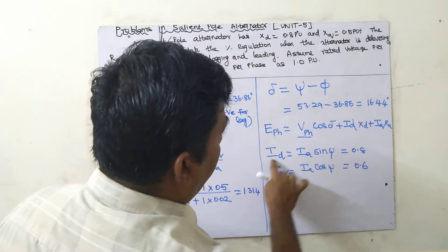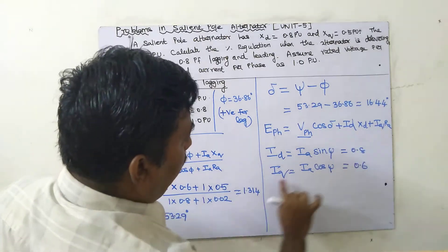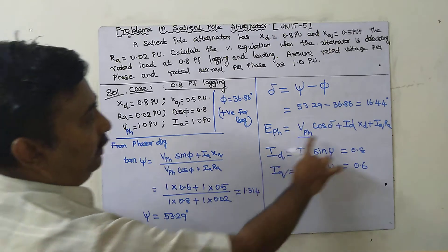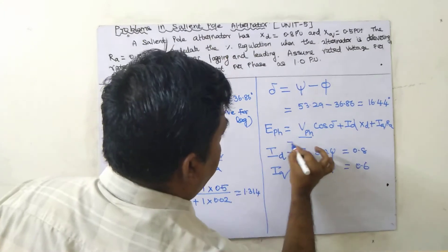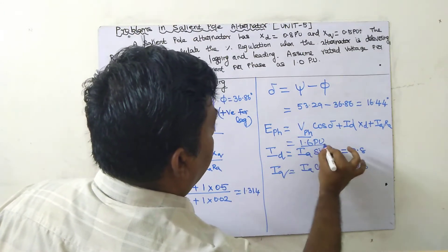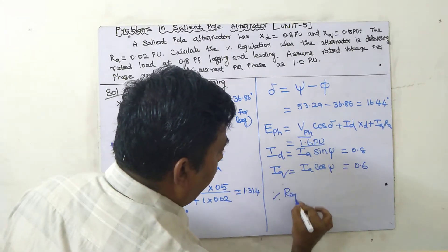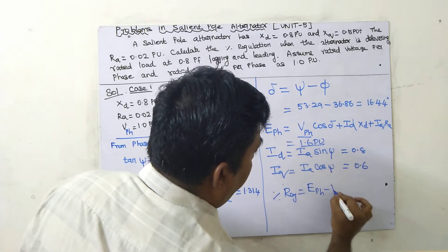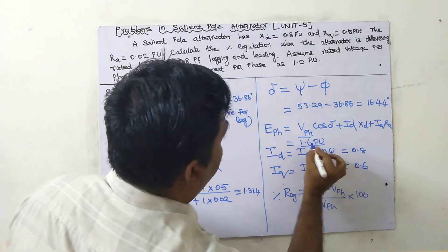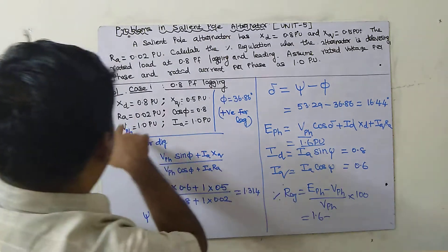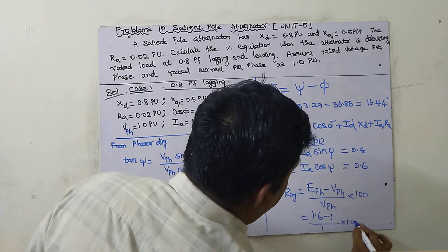Substituting into the E_phase formula: V_phase = 1, cos δ = cos(16.44°), Id = 0.8, xd = 0.8, Iq = 0.6, ra = 0.02 — all are known quantities. Solving gives E_phase = 1.6 per unit.